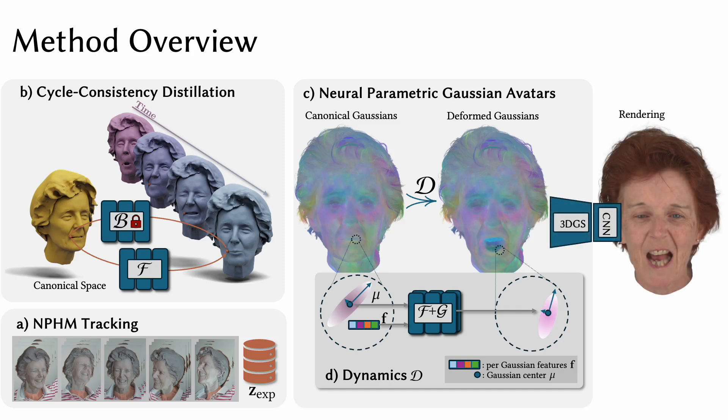Finally, we can efficiently render our avatars using vanilla 3D Gaussian splatting on the deformed point cloud.